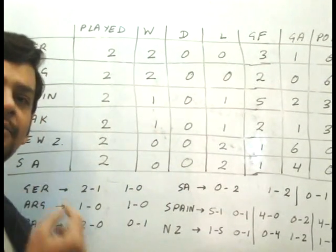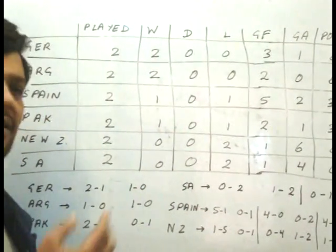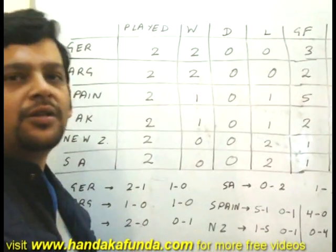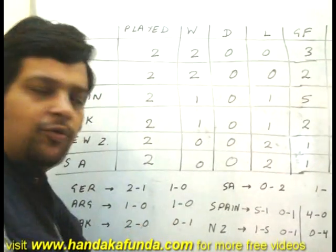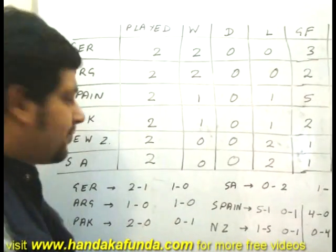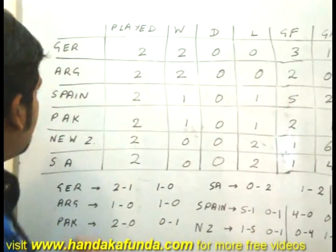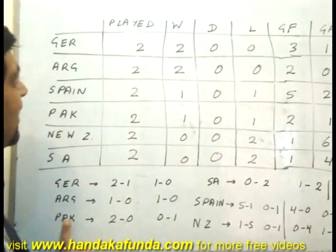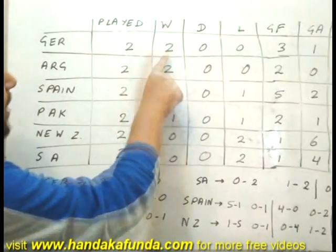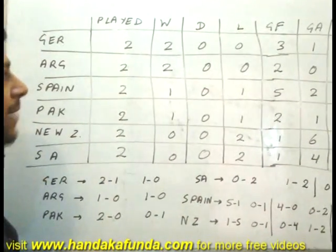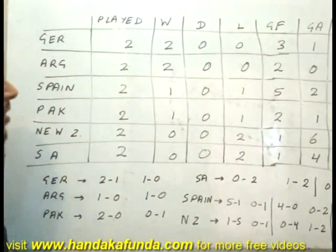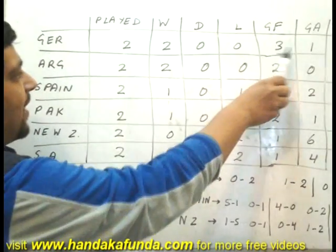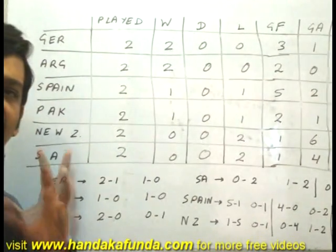Now let's try and analyse this data. Our first question is: which of the following statements is true about the first two rounds? Here I am given that Germany has played two matches and has won two matches. The goals for are three and the goals against is one.